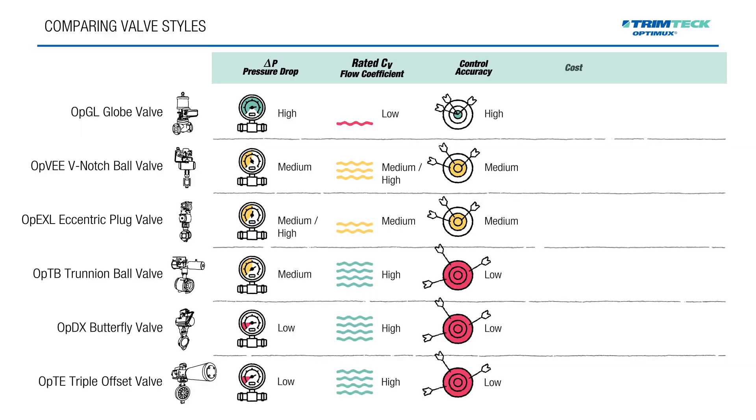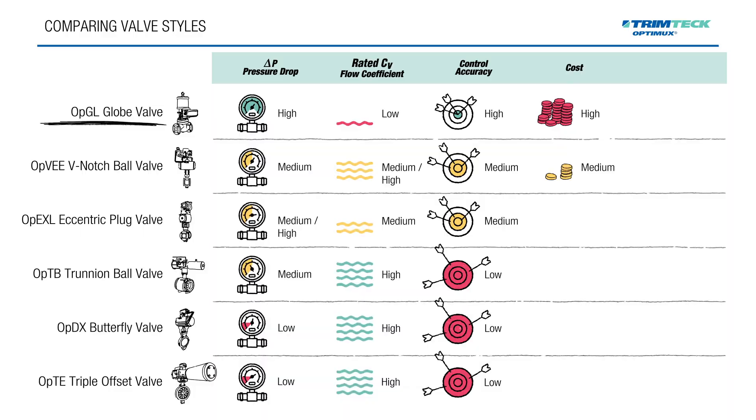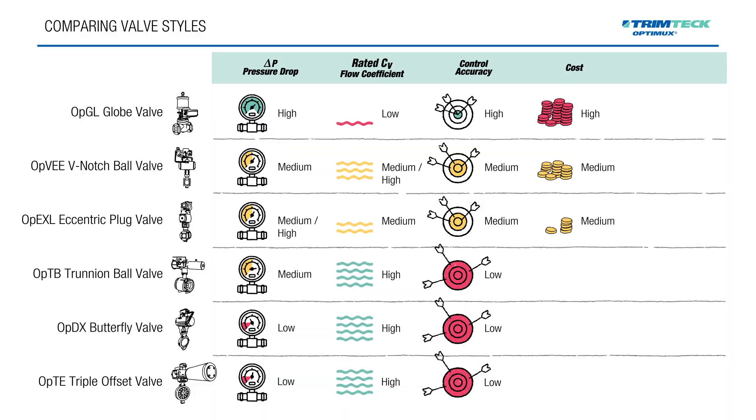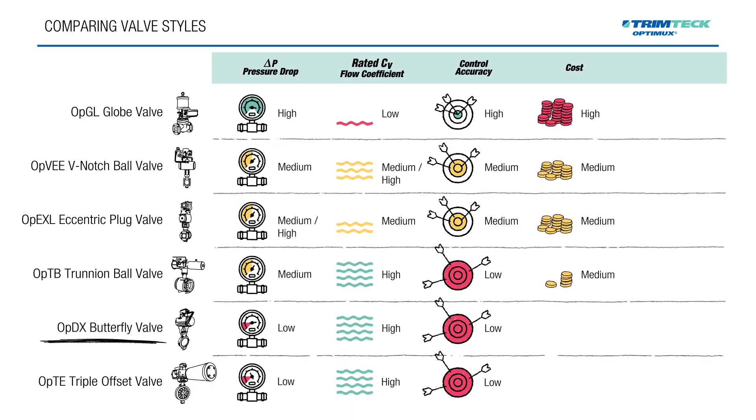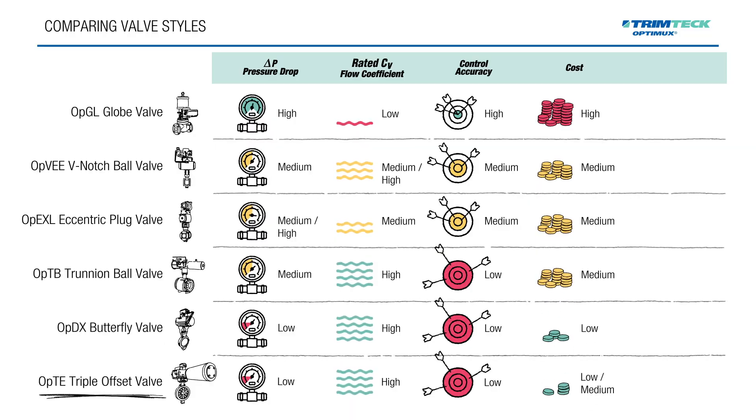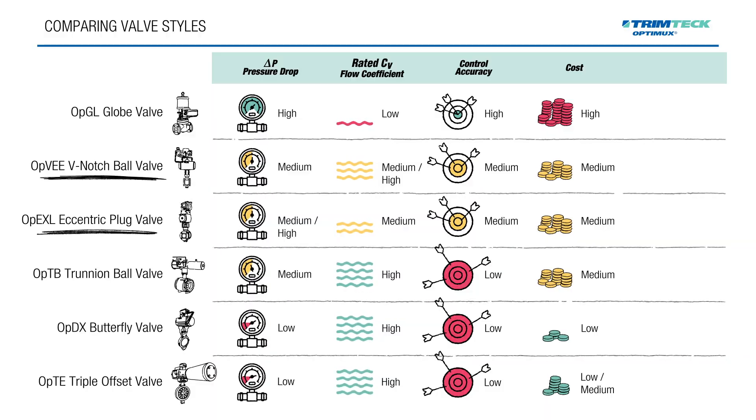Now let's talk about cost. Globe valves are typically the most expensive due to their complexity and larger size. Butterfly valves, especially high performance and triple offset designs, are often more cost effective at comparable sizes and pressure classes. V-notch ball and eccentric plug valves fall somewhere in between.